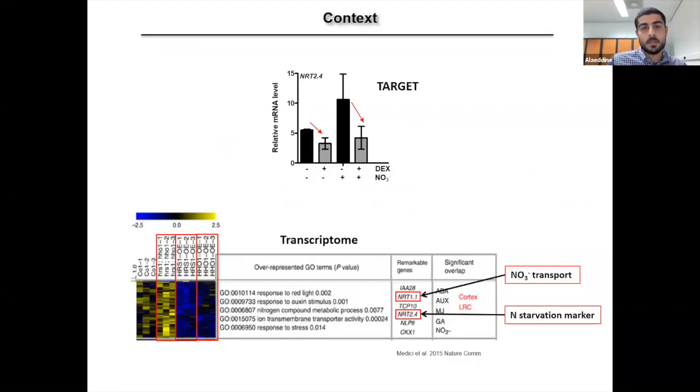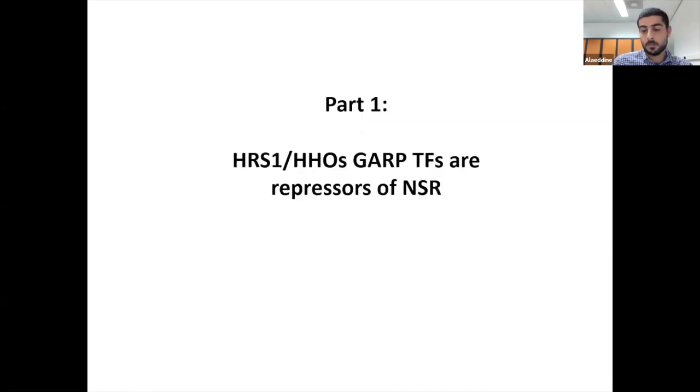The successfully transfected protoplasts will then be sorted by FACS and RNA can be extracted for further analysis. So we applied this approach for HRS1. And interestingly, we found that NRT2-4, which is a high affinity nitrate transporter, tends to be repressed by HRS1. And also in another study, we found that two nitrate transporters, including NRT2-4, are upregulated in the double mutant HRS1, HHO1, and downregulated in two overexpressant lines of HRS1 and its closest homologue, HHO1.